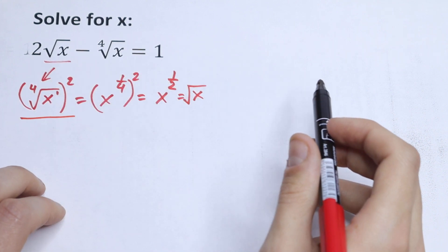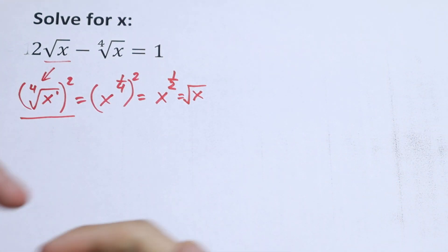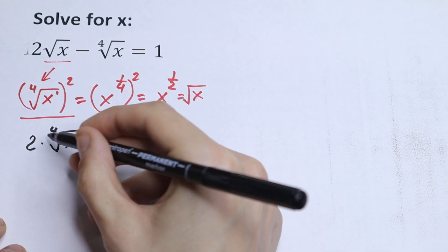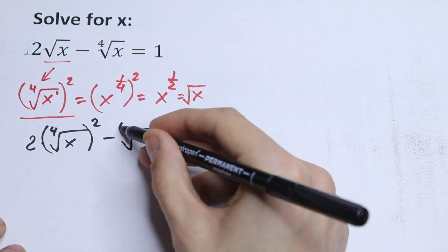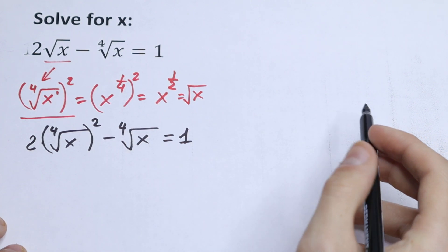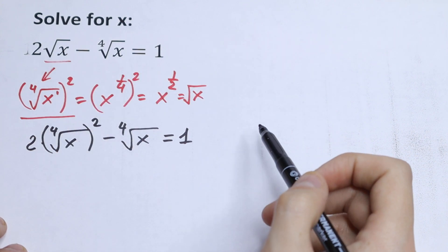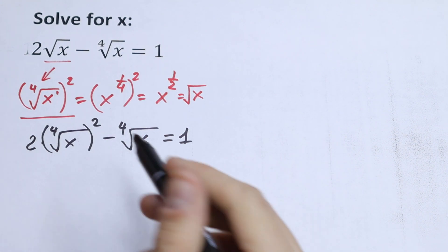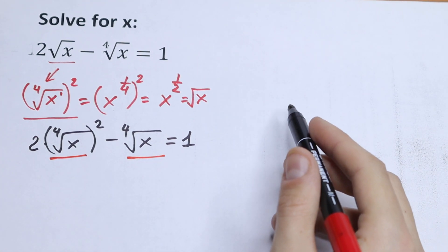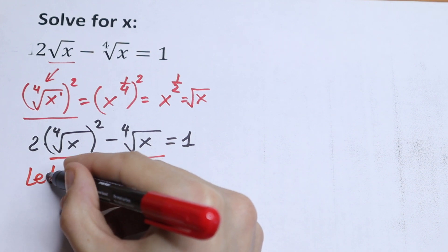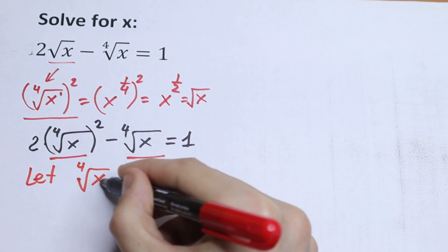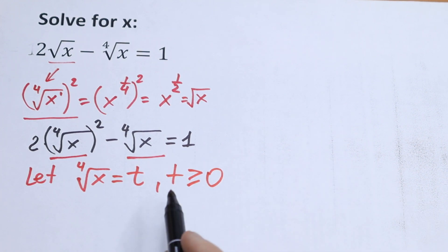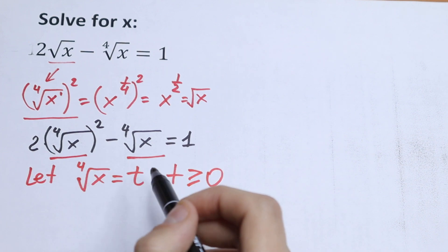So we can use this substitution. We rewrite the equation as 2 times the fourth root of x squared, minus the fourth root of x, equals 1. Now, let's substitute: let the fourth root of x equal t. We know that t must be greater than or equal to zero, because the fourth root of x must always be positive.